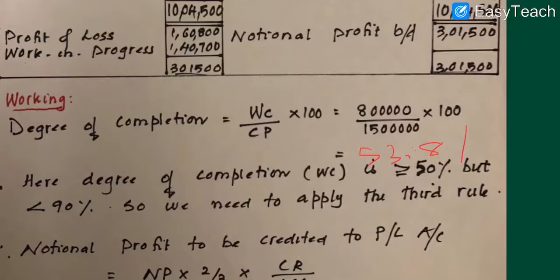There are rules based on degree of completion. The first rule applies when it is less than 25%. The second rule applies when it is 25% to less than 50%. Since our degree of completion is 53.8%, the third rule applies — that is, greater than or equal to 50% but less than 90%.